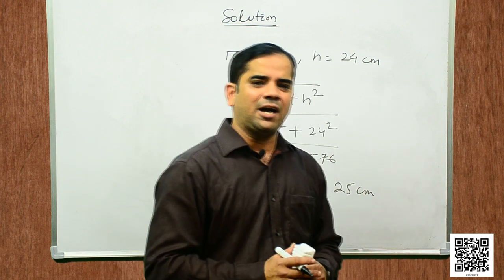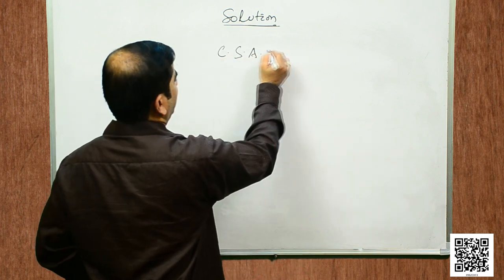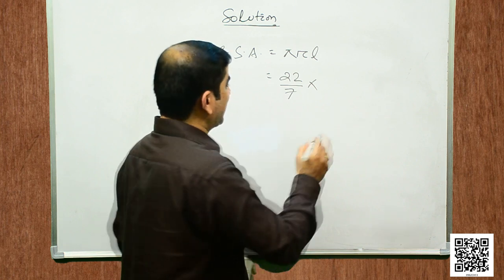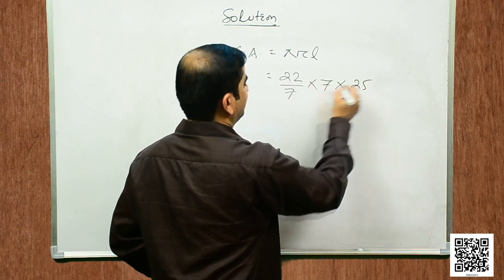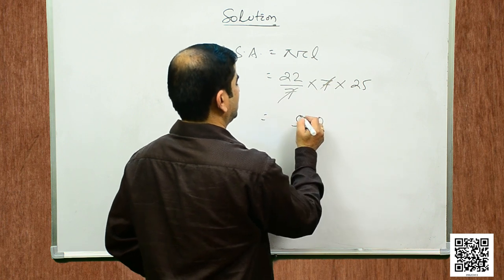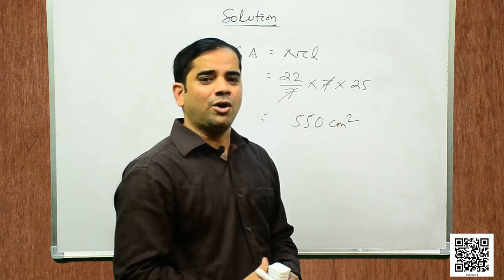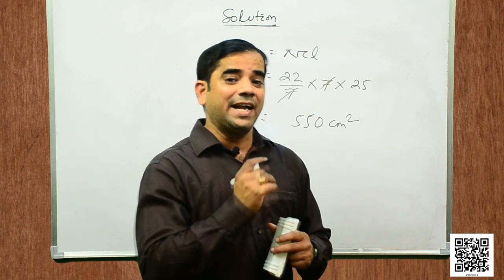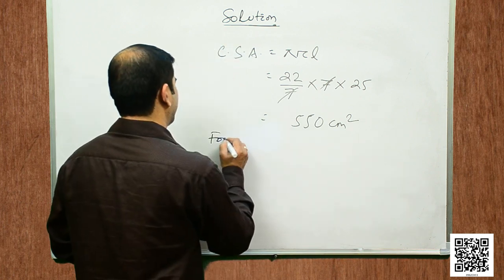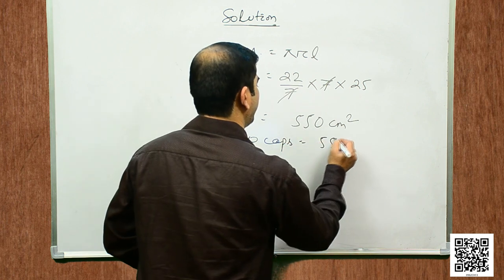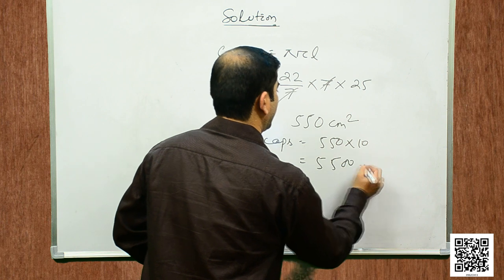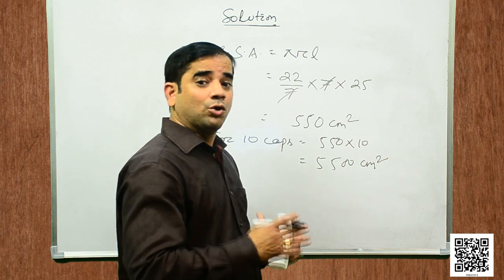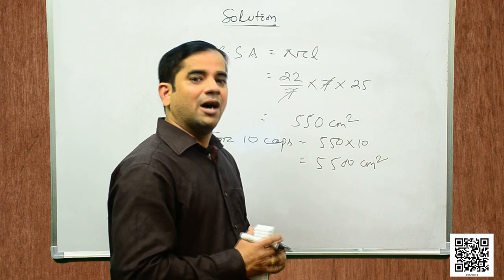Now let us find the curved surface area of the cone. Curved surface area = π r l = 22/7 × 7 × 25 = 550 square centimeters. This is for one cap. So for 10 caps, the area = 550 × 10 = 5500 square centimeters. This is the area of sheet required to make 10 caps. Hope you understand the solution for question number 7.